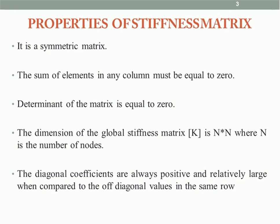The fifth property of the stiffness matrix is that the diagonal coefficients are always positive and relatively large when compared to the off-diagonal values in the same row. In whichever row of the stiffness matrix we consider, the diagonal elements are always positive.